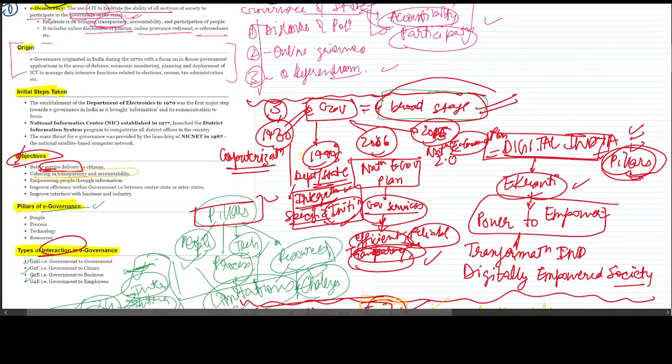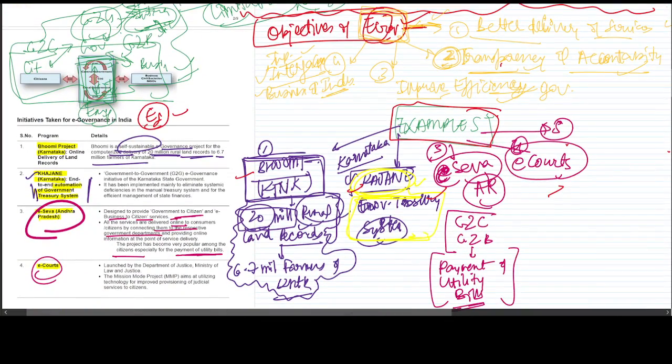Next, we studied four broad stages of e-governance in India. Then we learned the objectives of e-governance and understood seven examples of e-governance.